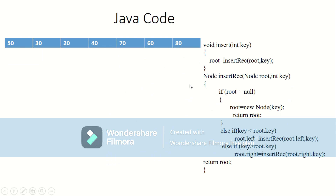There are two methods for insert. This method just calls another method called insertRec. If anyone wants to insert, they just call insert(50) — no need to pass the root every time. This insert method in turn calls insertRec with the root value and the key as parameters.